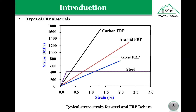From this diagram, even glass FRP — which is the weakest of the three types — is at least two to three times stronger than steel. The reason why fiberglass is the most popular among the different types of FRP is its cost-effectiveness; it's already two to three times stronger than steel, so there is no point spending more on carbon. Another key difference is that FRP is linear up to failure, while steel shows some ductility.